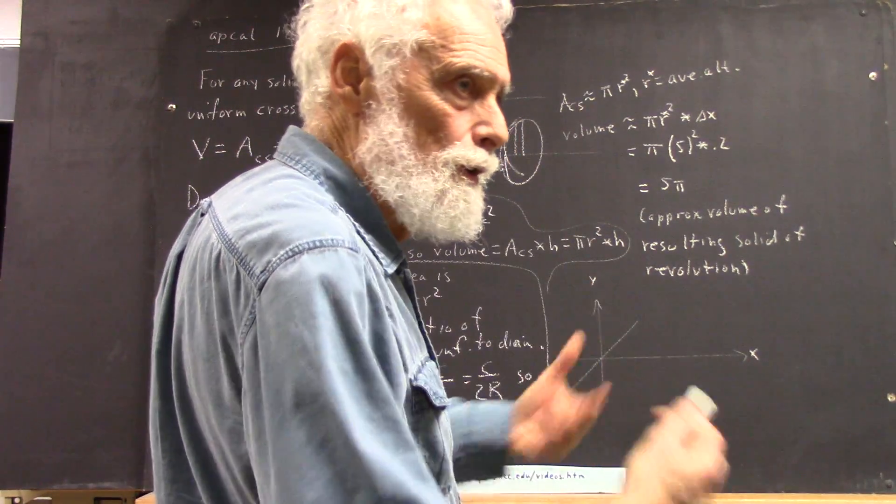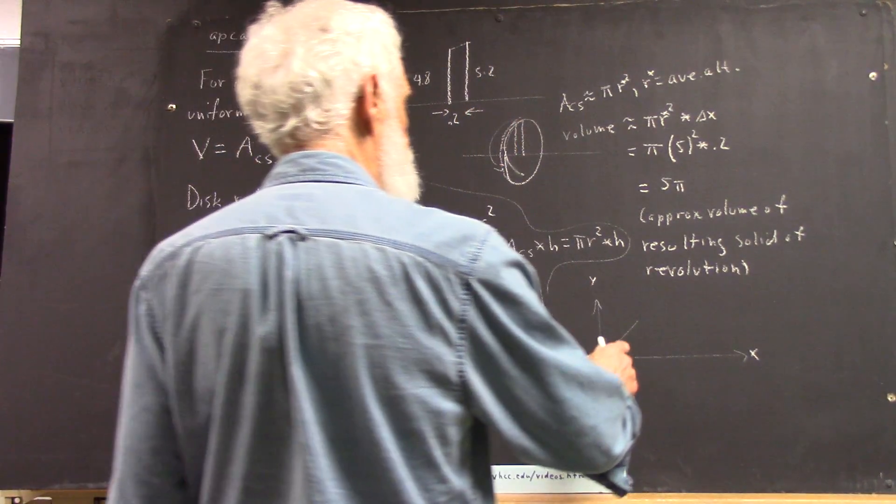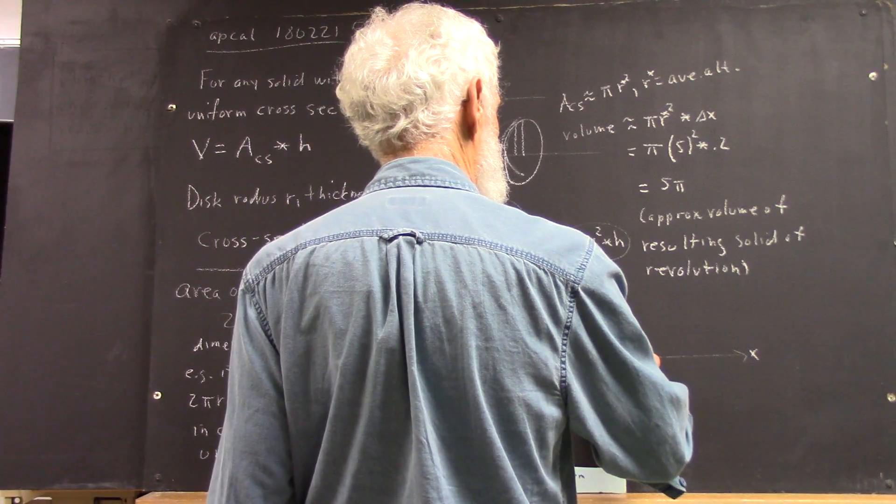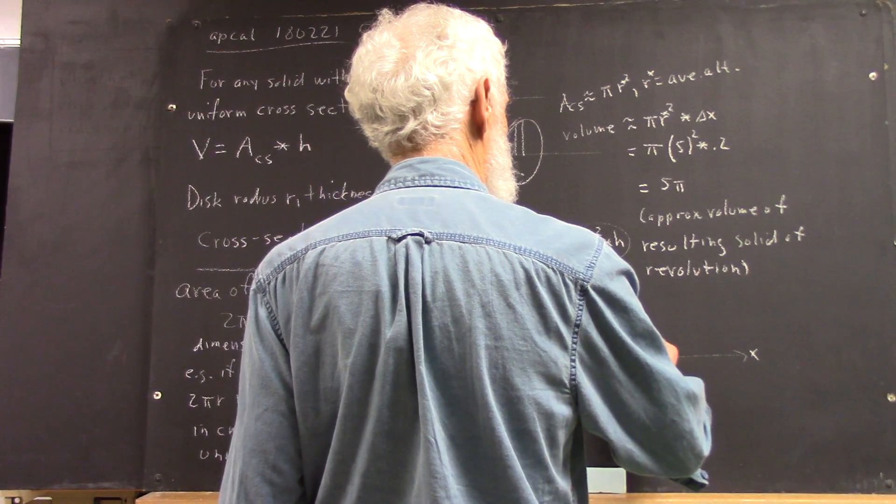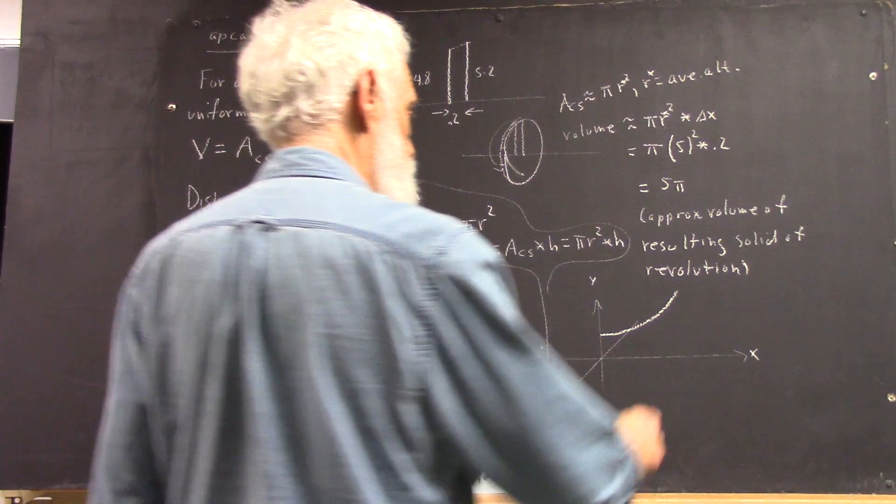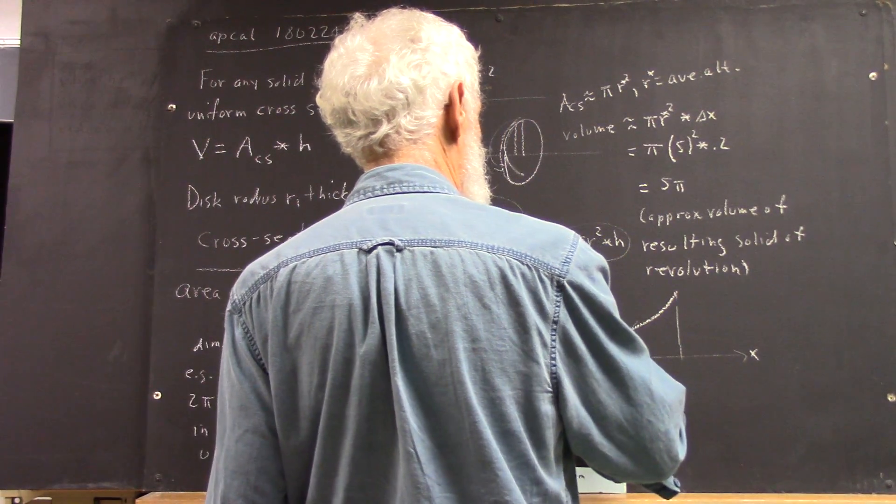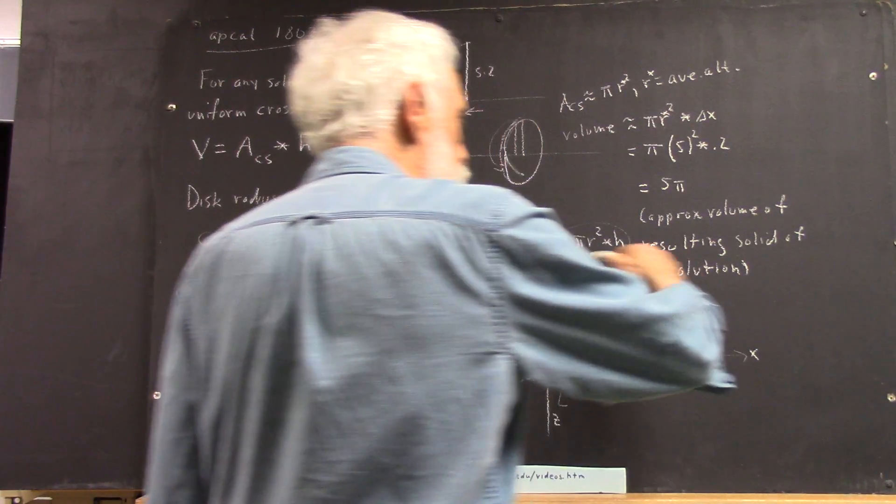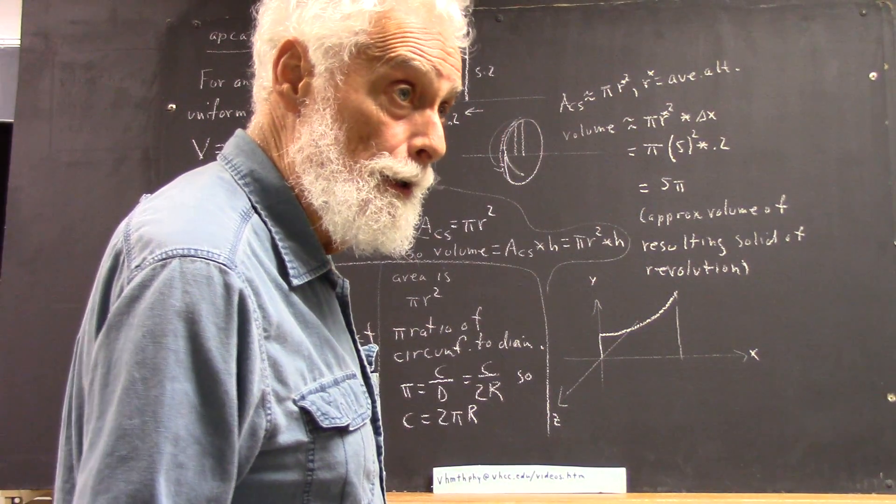Let's say we have a curve, looks like this, in the x-y plane. We revolve this curve about the x-axis, what do we get?